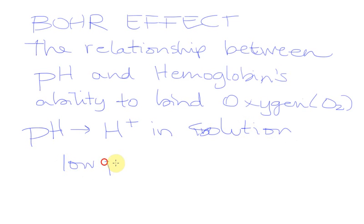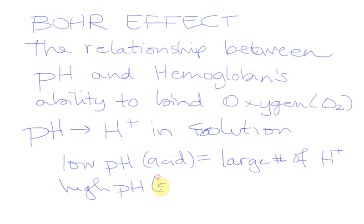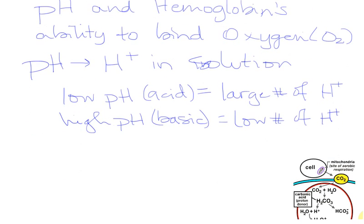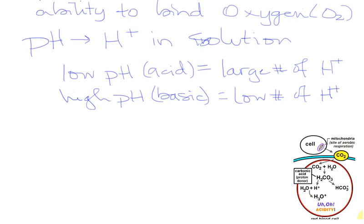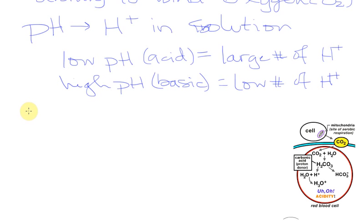A high pH is a basic solution and has a low number of hydrogen ions. Now let's talk a little bit about what causes a pH change in our blood. The bloodstream has a very narrow range of pH that is required.